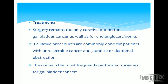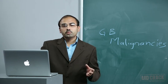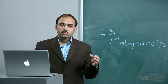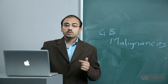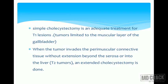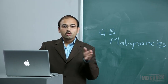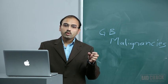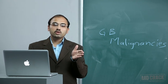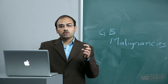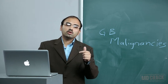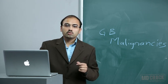Surgery is the only curative option for both gallbladder cancer and cholangiocarcinoma. Palliative procedures are most commonly performed for unresectable gallbladder cancer with jaundice or duodenal obstruction. Simple cholecystectomy is adequate for T1 lesions — tumors limited to the muscular layer — as these have less chance of nodal spread and cholecystectomy alone is curative.